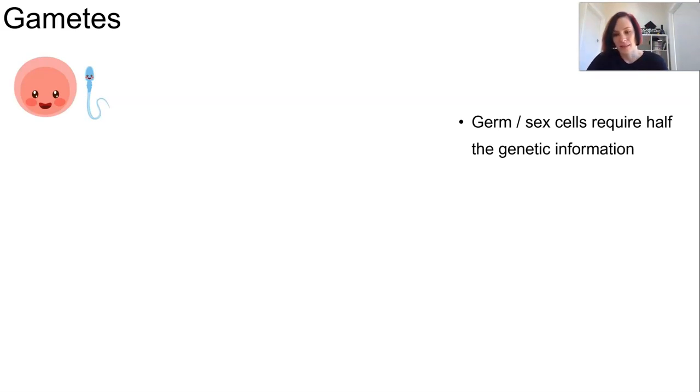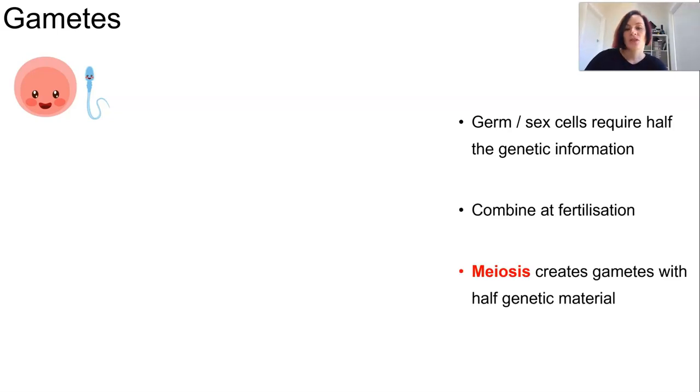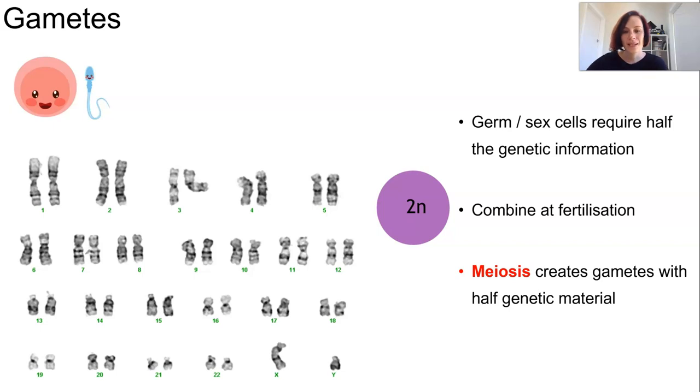The problem is that they need to have only half the genetic information. If they had all of the genetic information in a somatic cell they would have too much once they combined. So meiosis is the process that creates gametes with only half the full complement of genetic material and we call these cells haploid as opposed to diploid.